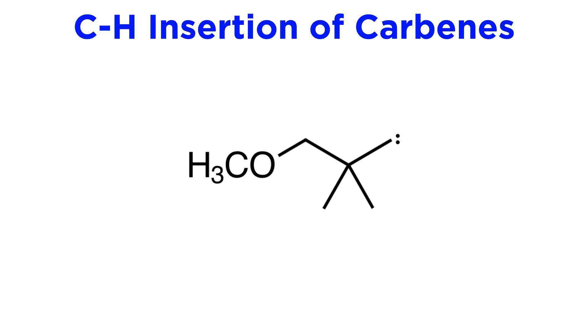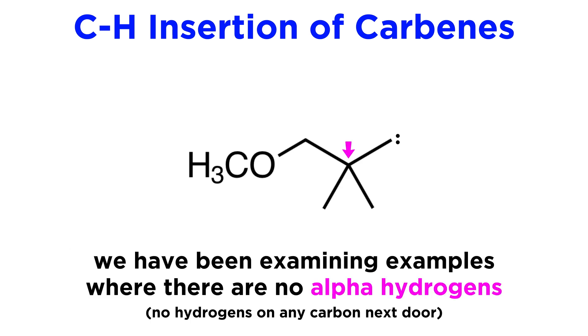Now, these examples we have mentioned have something in common: they all involve carbenes with no alpha-hydrogens, meaning no hydrogens on any carbons next door. Let's now examine the case where alpha-hydrogens are present, so that we can discuss another important reaction called the Bamford-Stevens reaction.